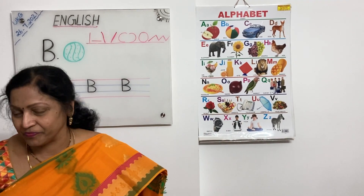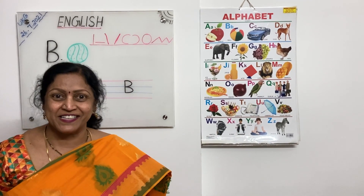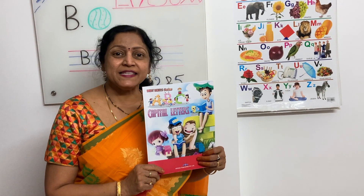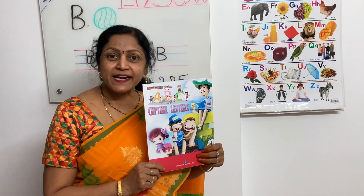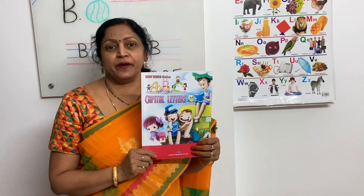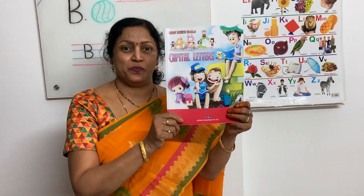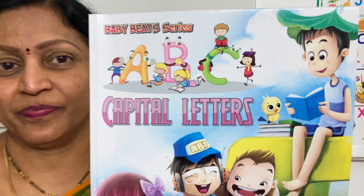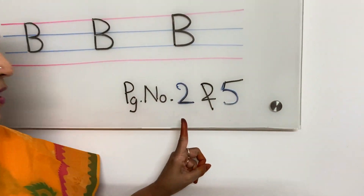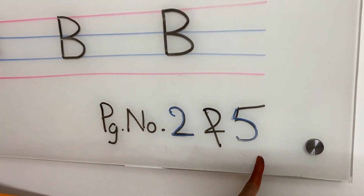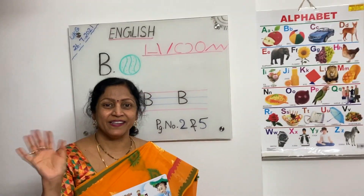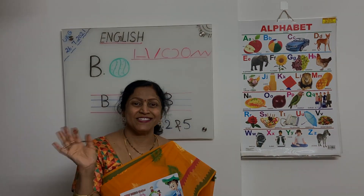Okay, children, did you enjoy the session? Dear parents, please guide the children to write capital letters A and B in this book. Page numbers are 2 and 5. Okay parents, bye children. Thank you parents. Bye bye.